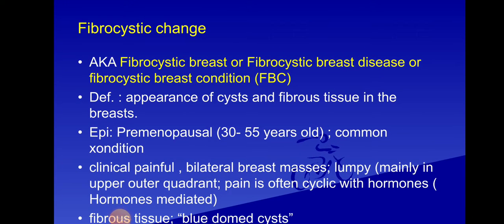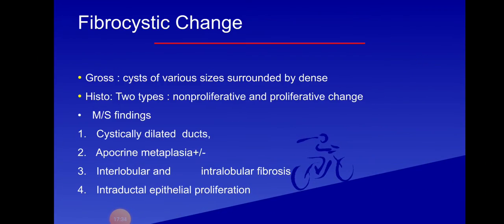On gross examination, there is fibrous tissue along with blue dome cysts. Blue dome cysts are multiple cysts of varying size surrounded by dense fibrous tissue, filled with bluish secretion — hence called blue dome cysts. Historically, fibrocystic changes are divided into non-proliferative and proliferative types.